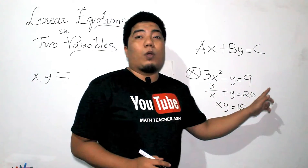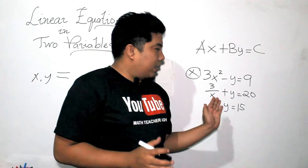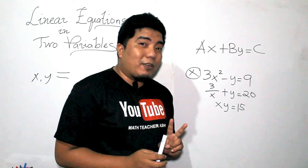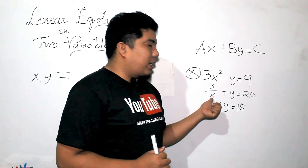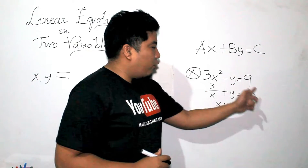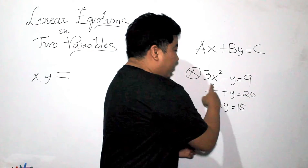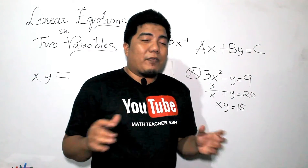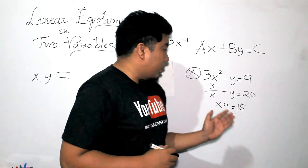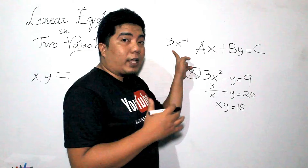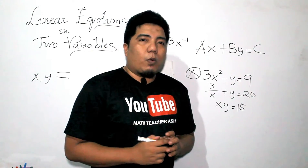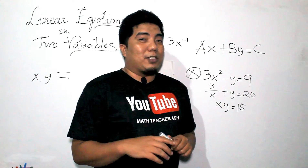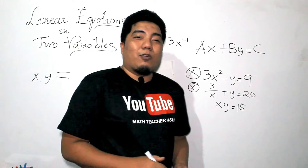Next, we have number 2: 3 over x plus y is equal to 20. As we can see here, it has x and y — 2 variables, both in the exponent of 1. However, this is not valid. Why? Because if we change this into standard form, 3 over x will become 3x to the power of negative 1 — applying the law of exponents. That negates our standard form of a linear equation in 2 variables. So that is also wrong.